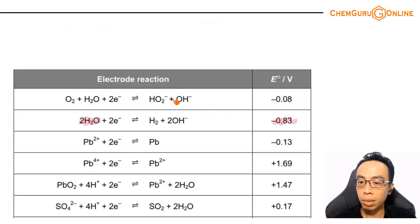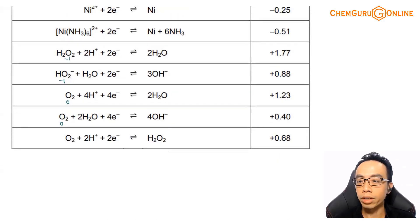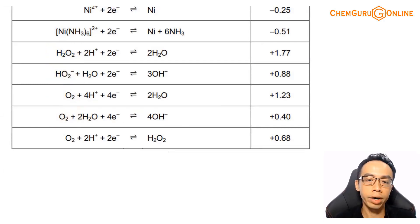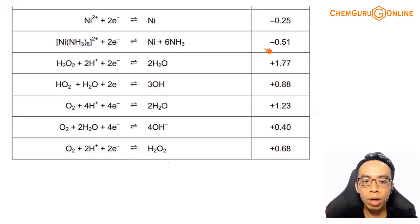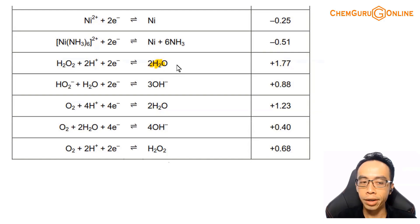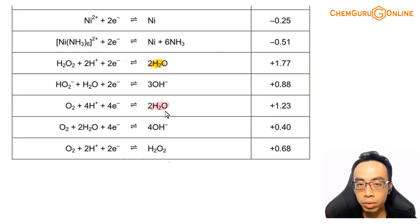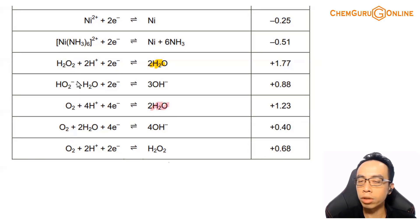Let's look at the data booklet — find water first since we're more familiar with it. The oxidation of water means only water is on the right-hand side, nobody else. If water appears together with somebody else, it's the other species taking part in oxidation. Looking at the data booklet, we can actually find two possible half equations involving water. When there are two choices, we look at the oxidation state of the product and see which one is more stable or more common.